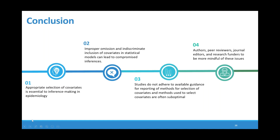In summary, we know that appropriately dealing with confounding bias is essential to drawing valid inferences from non-randomized studies, and that improper omission and indiscriminate inclusion of covariates in statistical models can lead to compromised inferences. Selecting important confounders and minimizing their impact through appropriate design and statistical considerations, then acknowledging any remaining uncertainty due to potential residual confounding, is integral to inference-making in epidemiology. Unfortunately, we found that studies often use suboptimal methods to select covariates for analytic models. We encourage authors, peer reviewers, research funders, journal editors, and Cochrane review authors to be more mindful of these issues. Thank you for your attention.